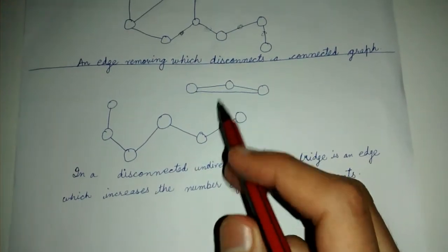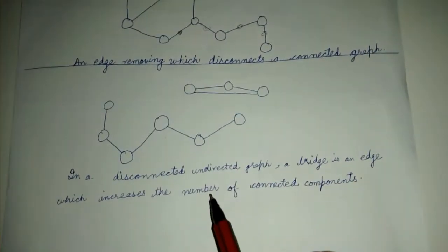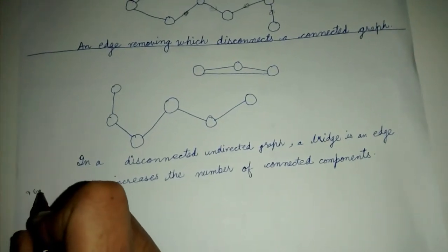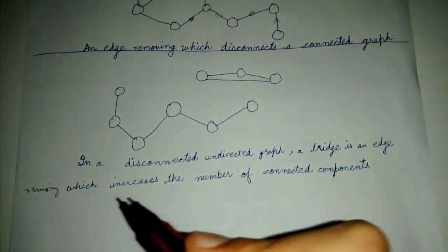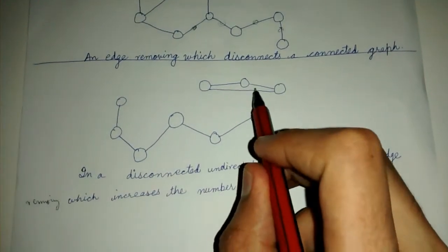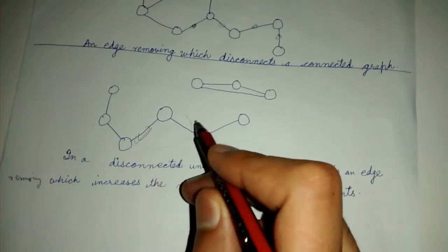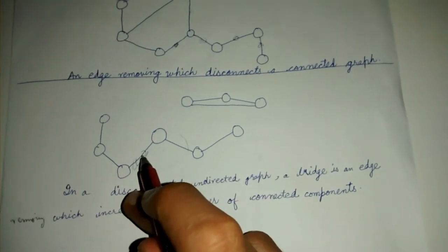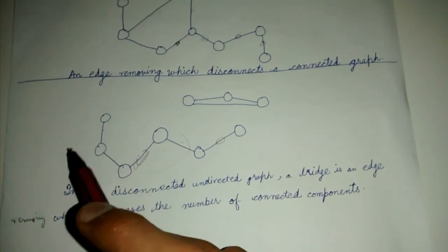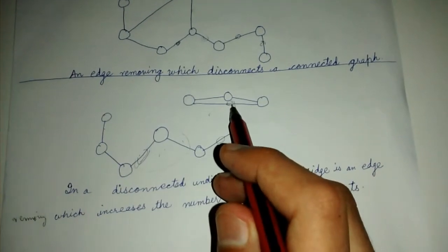In this one, this is a disconnected graph, so it's already disconnected. So a bridge is an edge removing which increases the number of connected components. If we remove this edge, right now there are two connected components — this is connected in itself, this is connected in itself. If we remove this edge, there will be three connected components, so this is a bridge. Similarly for this edge, and similarly for this edge. But if we remove this edge, there are still two connected components, so this is not a bridge.